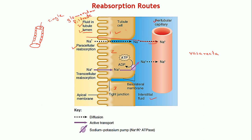Between adjacent cells there is a gap. Though tight junctions are present, these spaces are permeable to smaller molecules and smaller ions. This is the first process — paracellular reabsorption — whereby ions move from the lumen into the interstitial fluid through the spaces between cells, and from there pass easily into the bloodstream. This is a passive process; energy is not required.